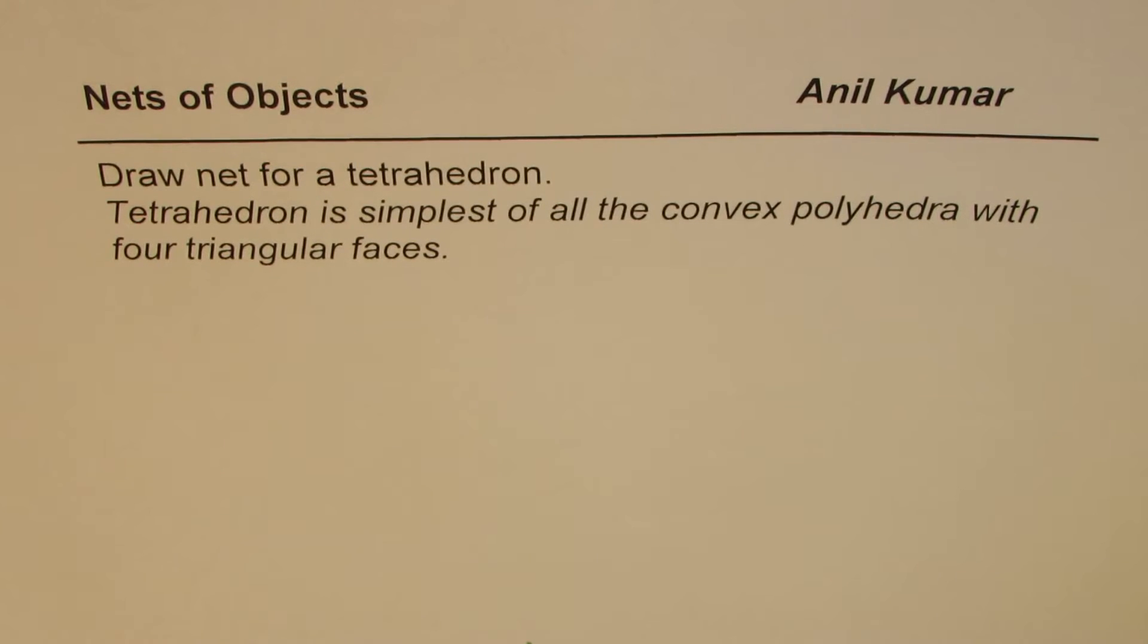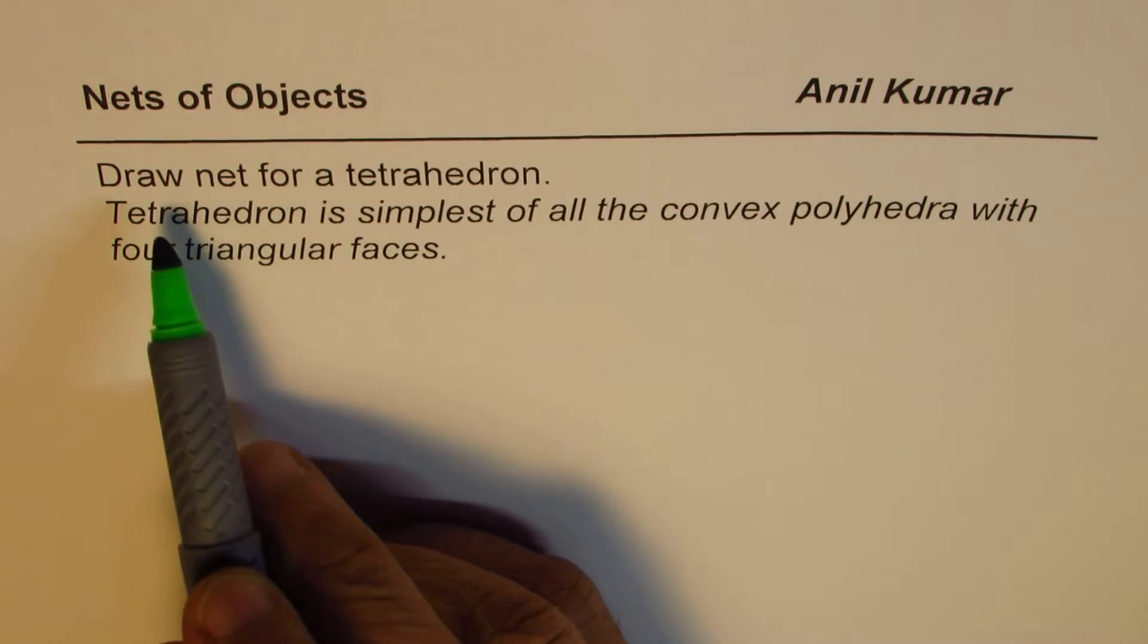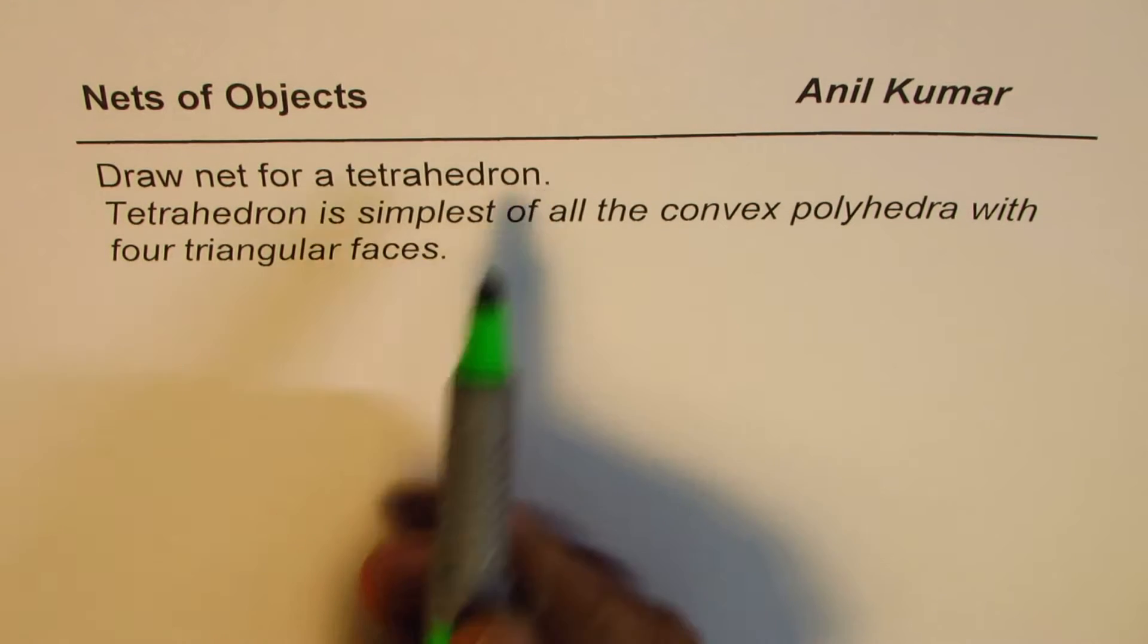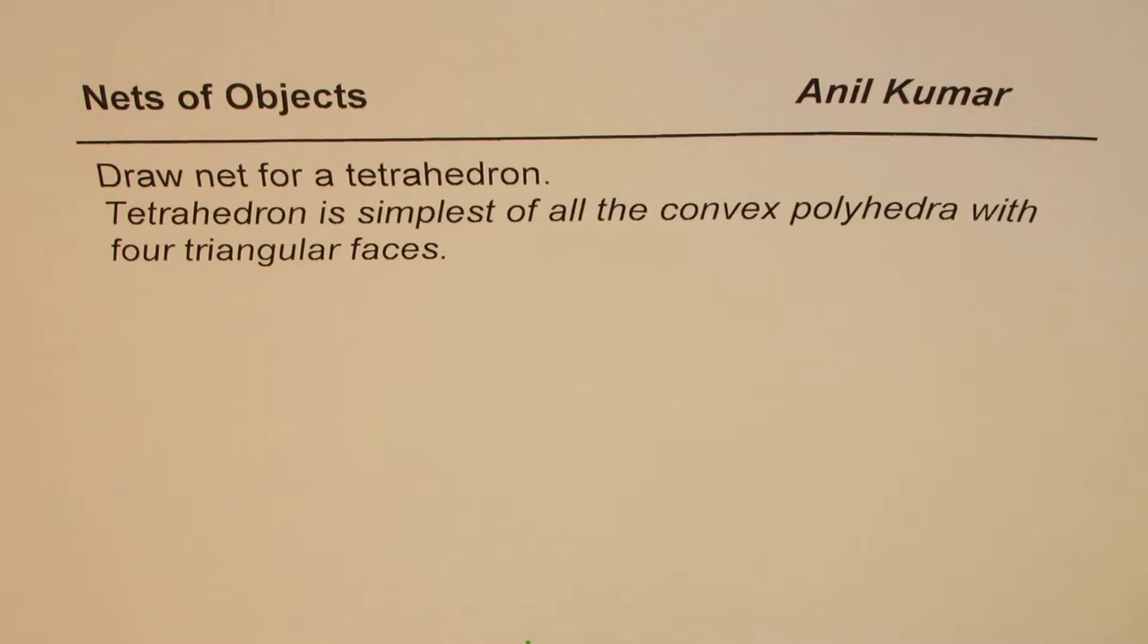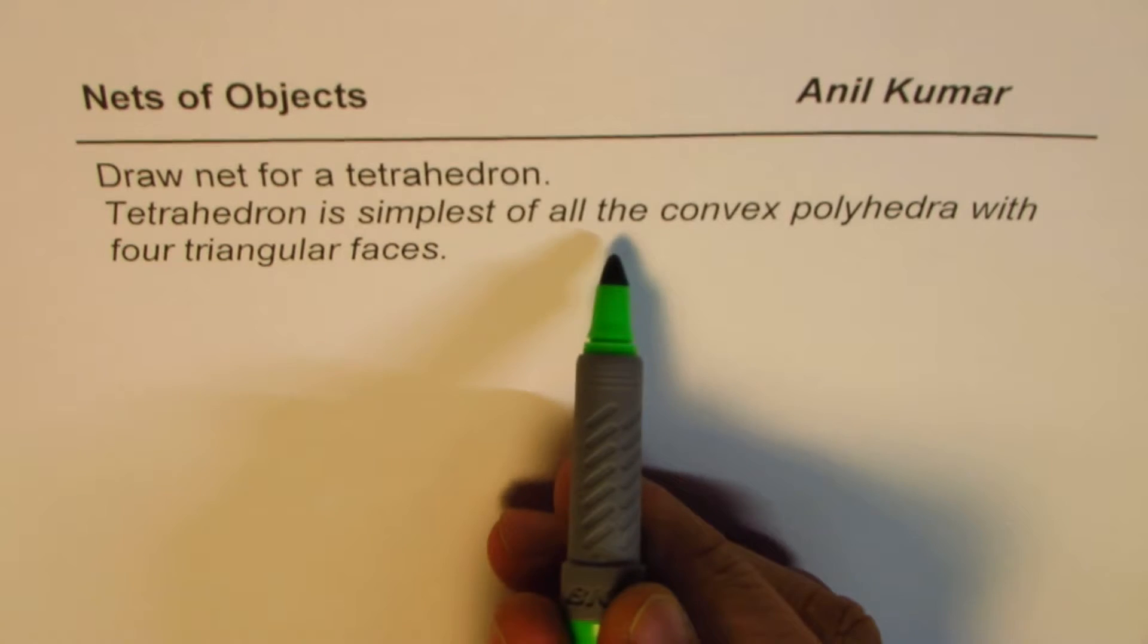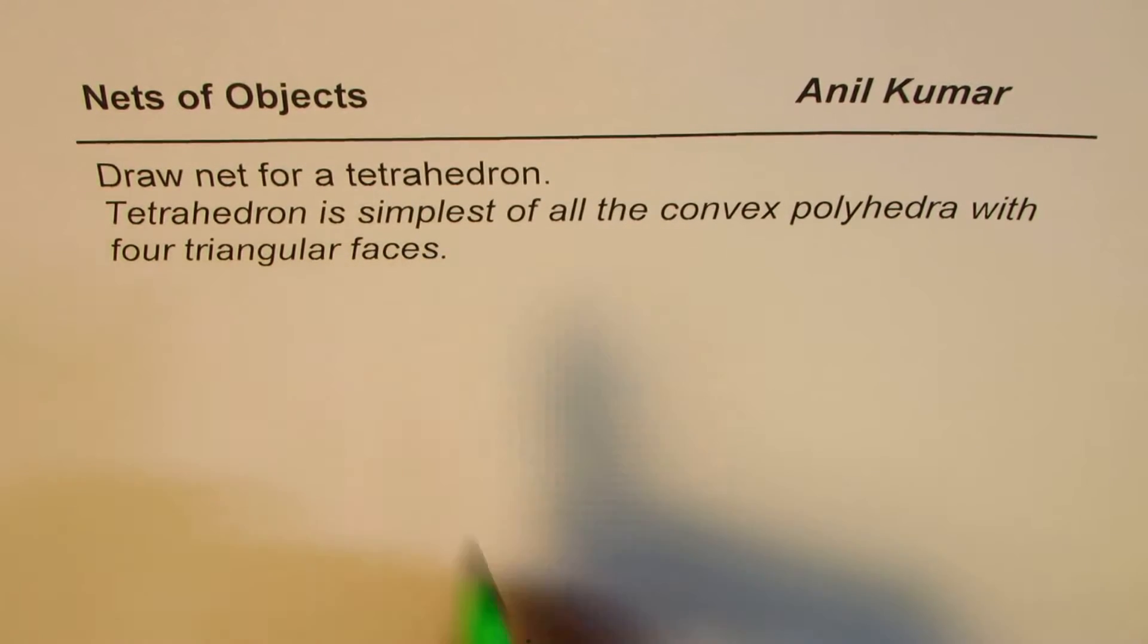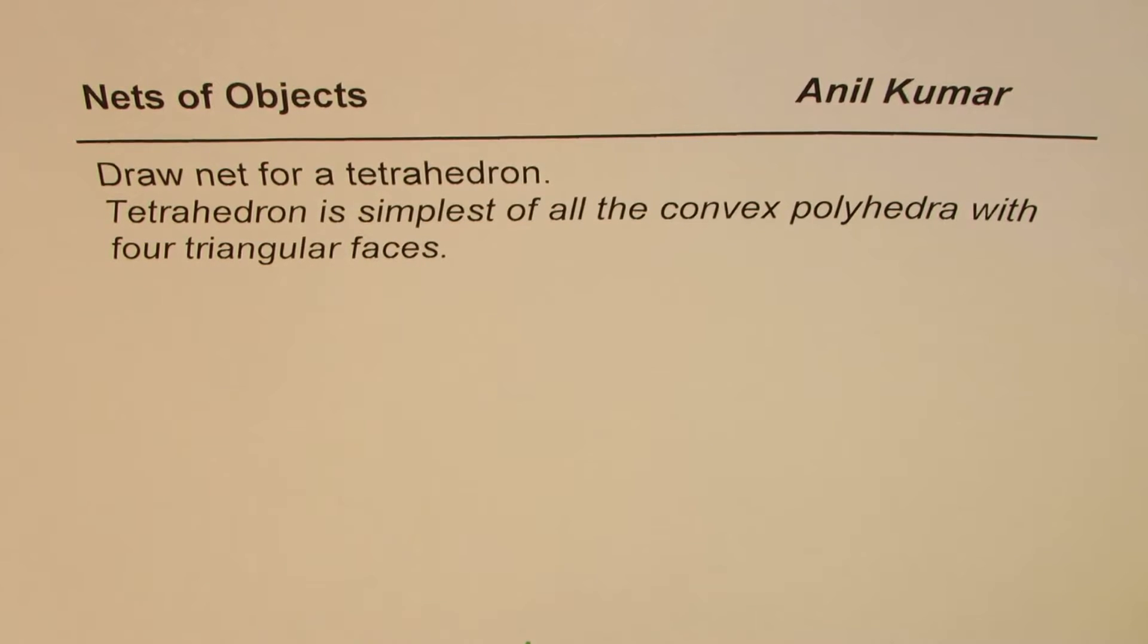I'm Anil Kumar sharing with you a test question on nets of objects. The question here is: draw net for a tetrahedron. Now what is tetrahedron? Tetrahedron is simplest of all the convex polyhedra with four triangular faces. That information is given to you. You can pause the video, answer the question, and then look into my suggestions.